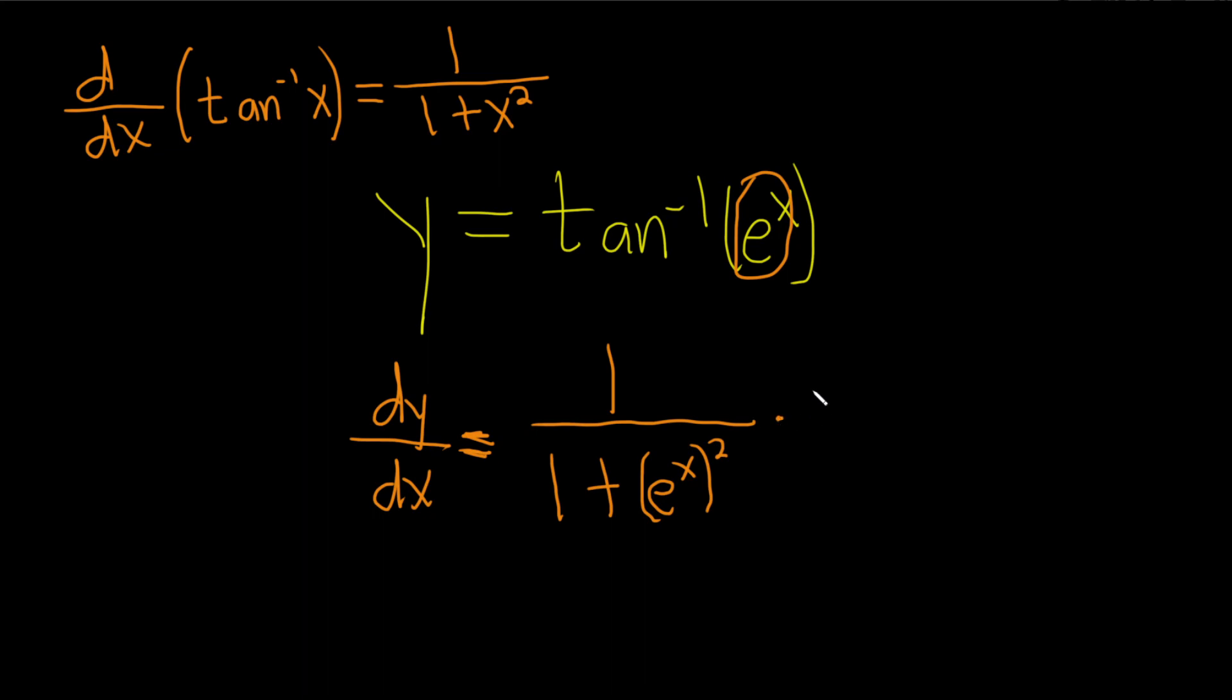Then you multiply by the derivative of the inside function. Your inside function is e to the x, and its derivative is simply e to the x.